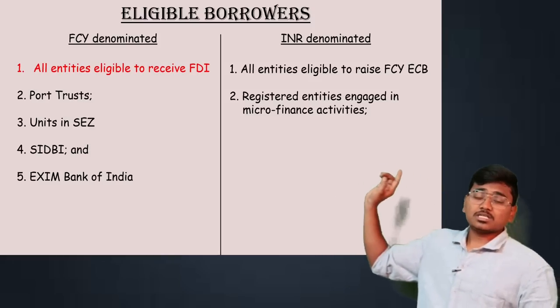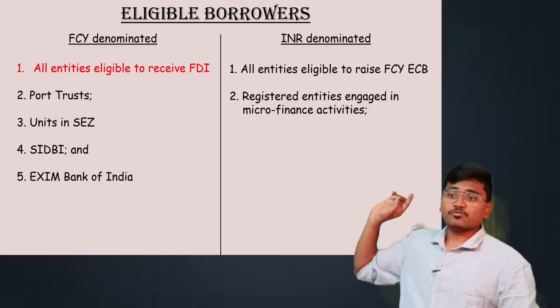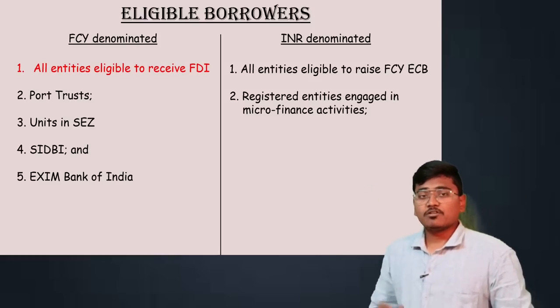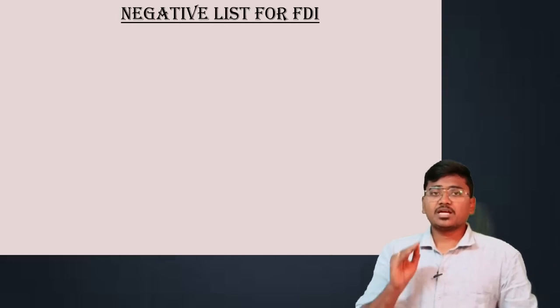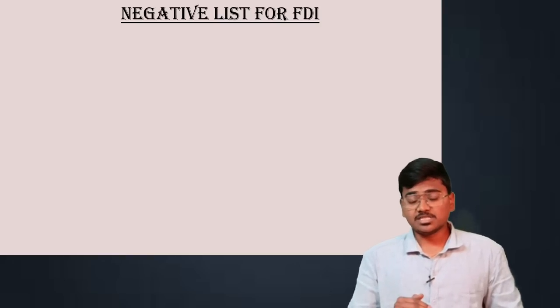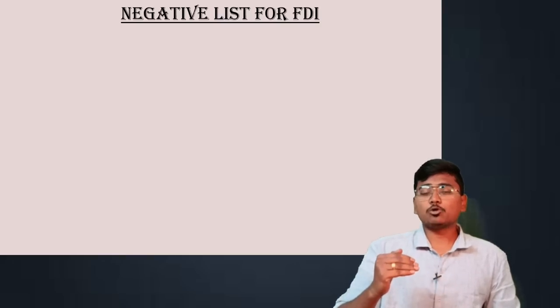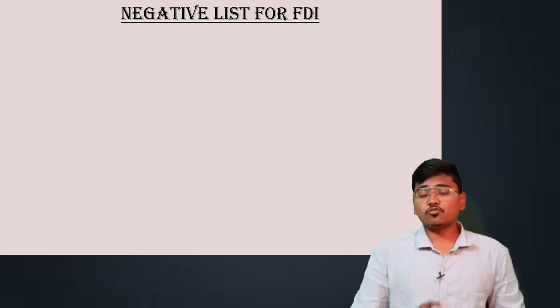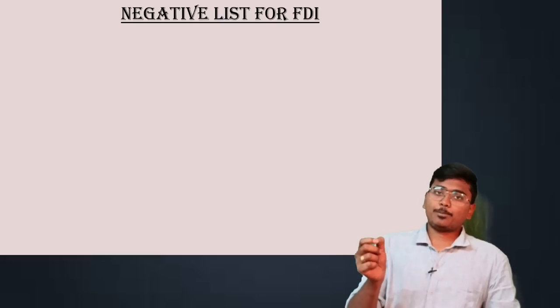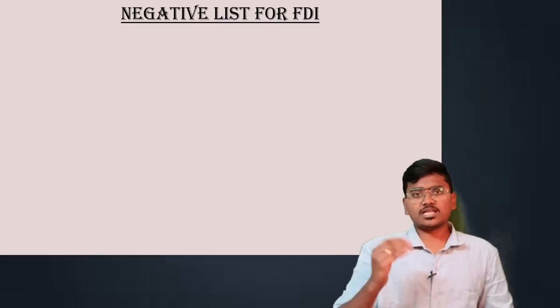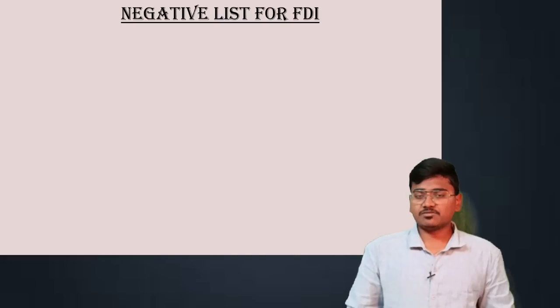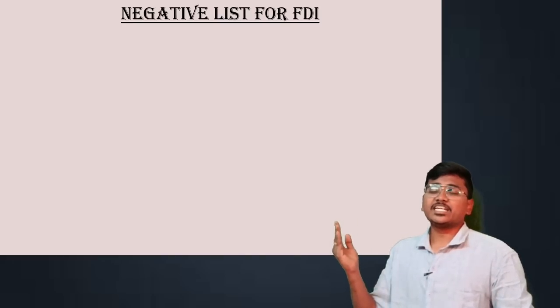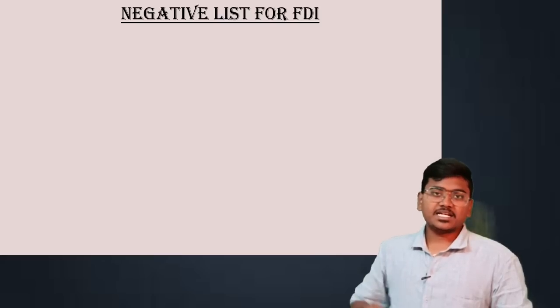Now let us see what entities are eligible to receive Foreign Direct Investment. Under FDI, there is a negative list — entities specified in that list cannot receive Foreign Direct Investment. Apart from those entities, all others can receive FDI. Let us see what constitutes the negative list.